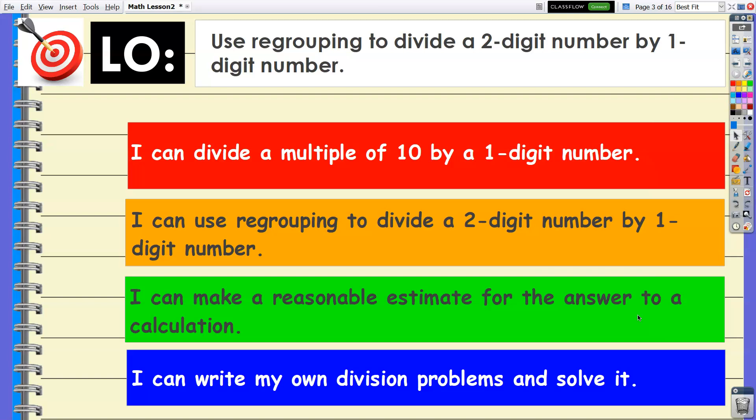Success criteria: I can divide a multiple of 10 by a one-digit number. I can use regrouping to divide a two-digit number by a one-digit number. I can make a reasonable estimate for the answer to a calculation, and I can write my own division problems and solve it.